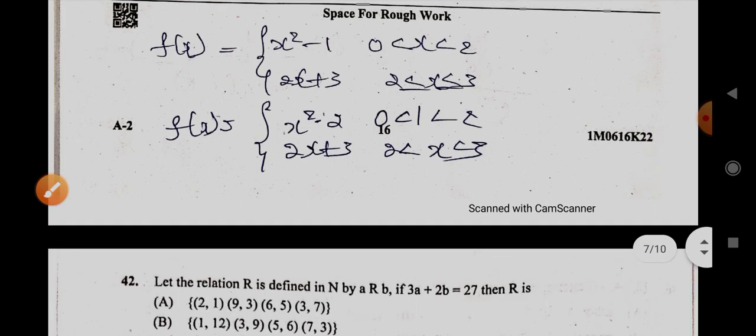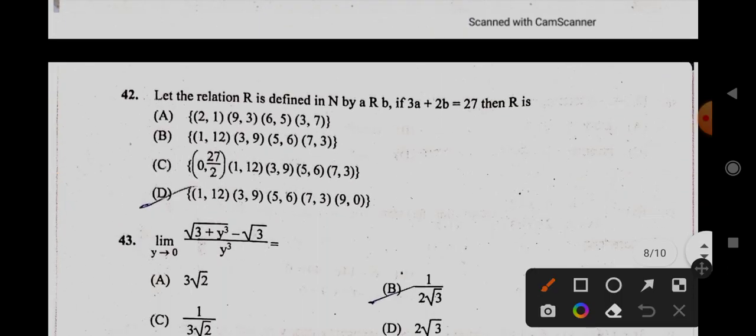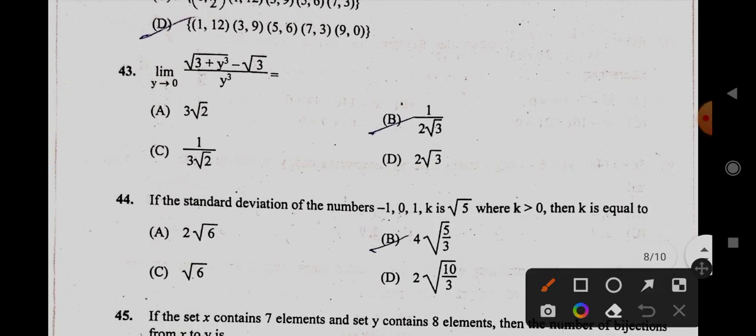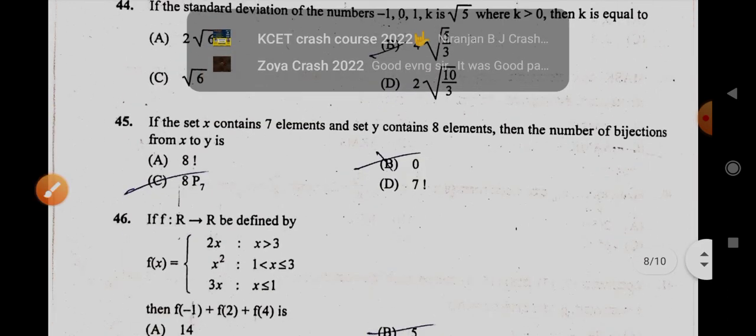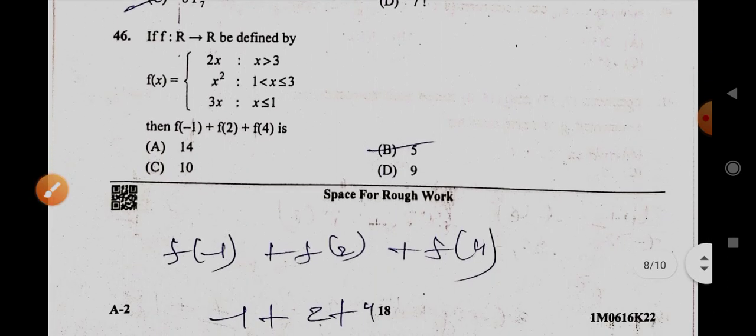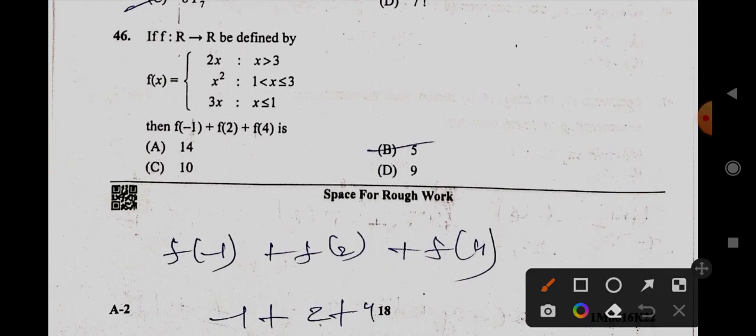So then 42nd, it is B, this one it is. And 43, it is B option, 1 by 2 root 3. 44th is A. And 45 is B. 46th is D option here, 9 it is.